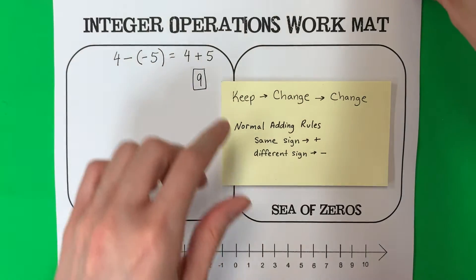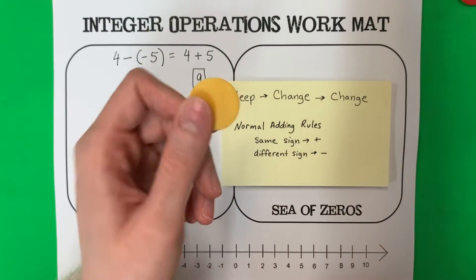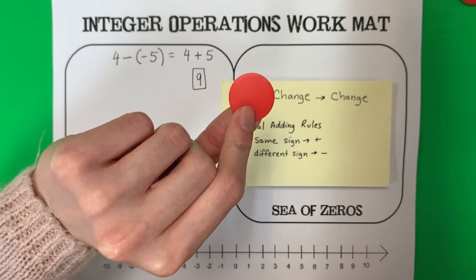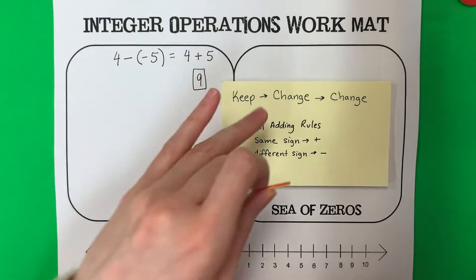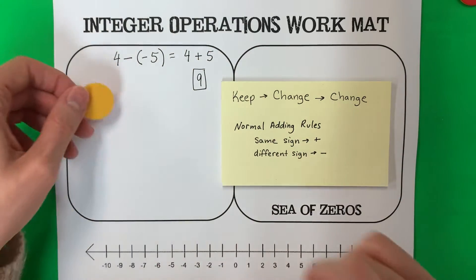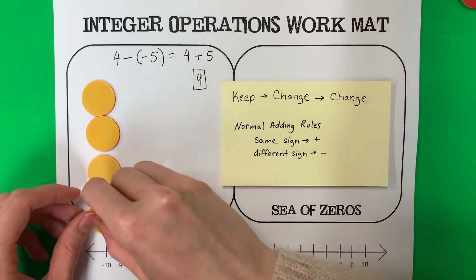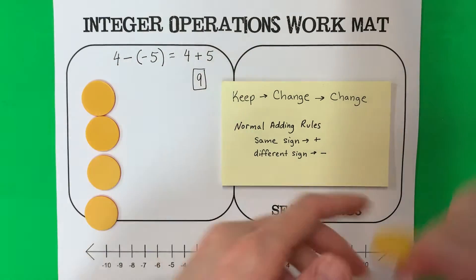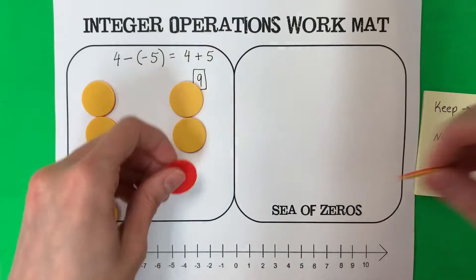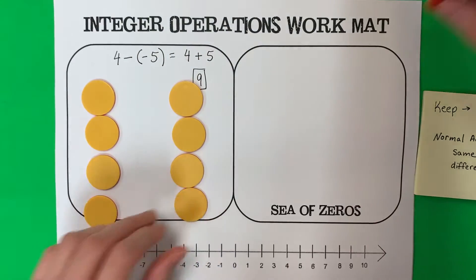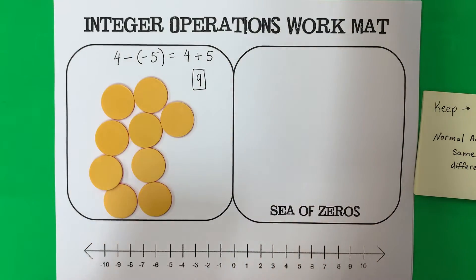Now we can model it. We are going to use our little buttons — yellow means positive, red means negative. So after you do keep, change, change, you model it with your buttons. Positive 4 is 4 yellows, and positive 5 is 5 more yellows. All together, that is 9 yellows — that's positive 9.